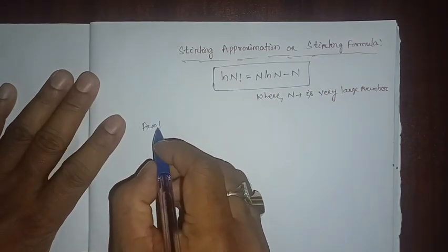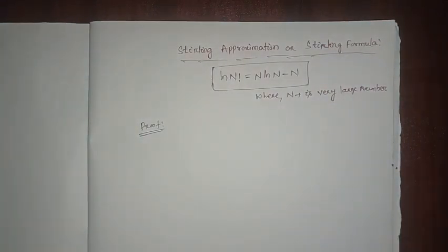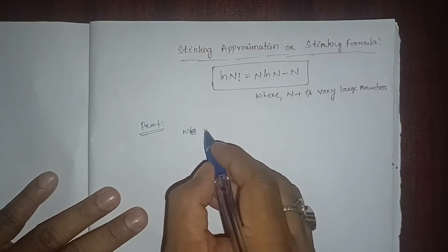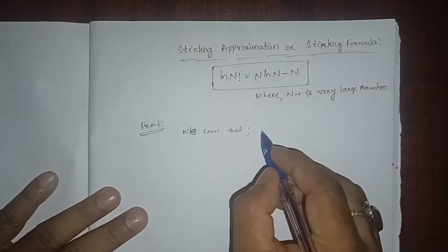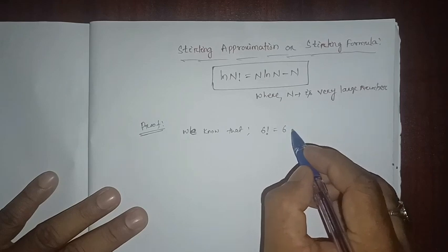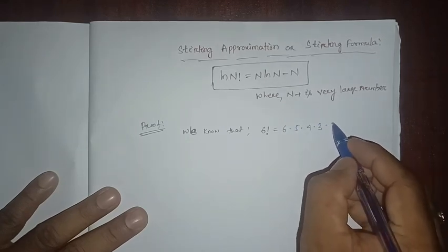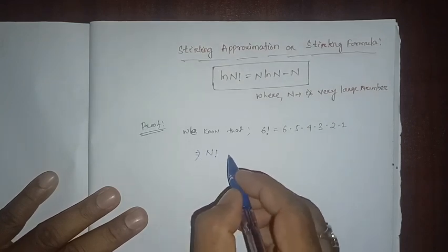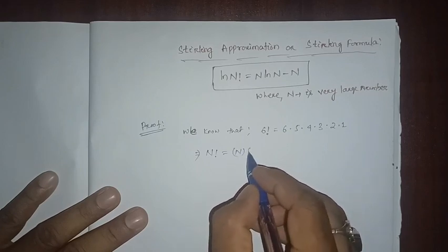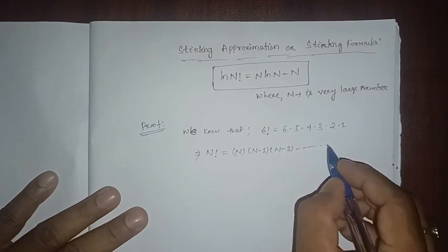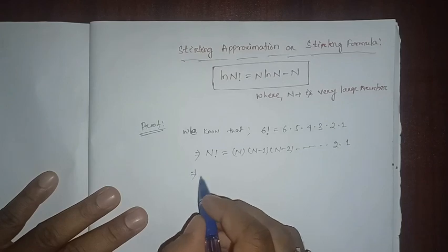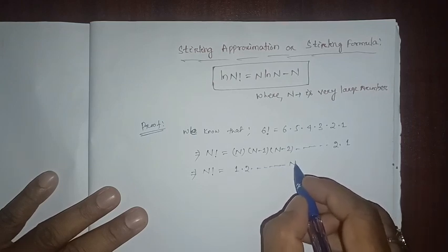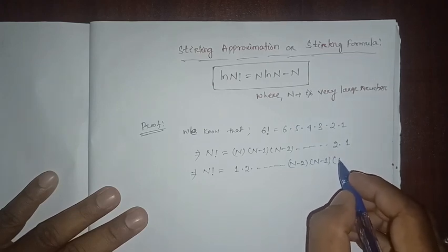So let's start our proof. I am writing this proof step by step so you can write it in your notes for exam purposes. We know that if we consider the number 6, its factorial is 6 × 5 × 4 × 3 × 2 × 1, decreasing by 1 each time. So if n is any number, n! = n × (n−1) × (n−2) × ... × 2 × 1, which can also be written in reverse as 1 × 2 × ... × (n−2) × (n−1) × n.